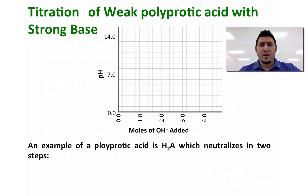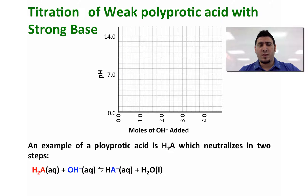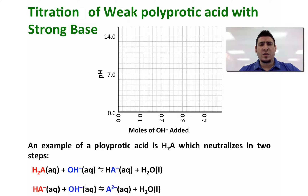Now let's discuss the titration of a weak polyprotic acid with a strong base. An example of a polyprotic acid is H2A — a general diprotic acid which neutralizes in two steps. The first step is H2A reacting with OH⁻ to give HA⁻ plus H2O. HA⁻ is the conjugate base of H2A, and HA⁻ will also react with OH⁻ to give A²⁻ plus water.